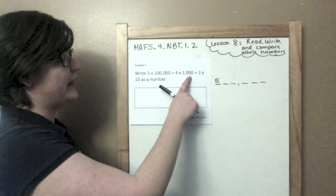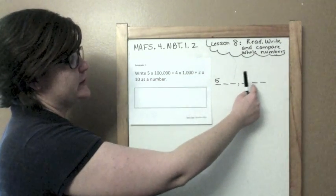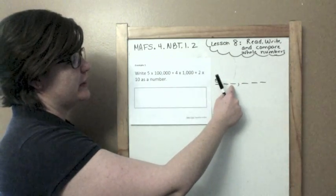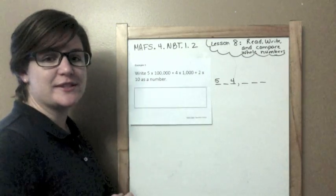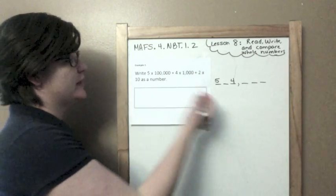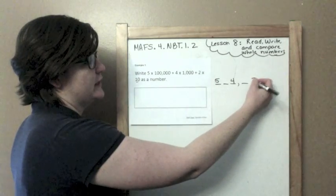Four times 1,000s, so where is the 1,000s place? Ones, tens, hundreds, comma, thousands. Four, okay. And then 2 times 10. Two times 10, so that would be in the 10s place. Ones, tens, I'd put a two.